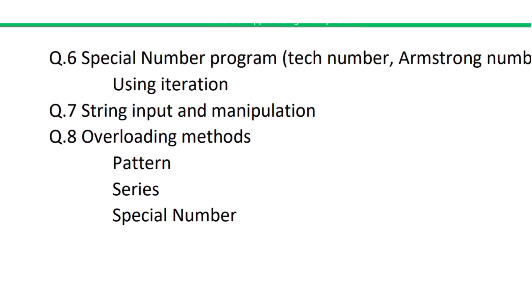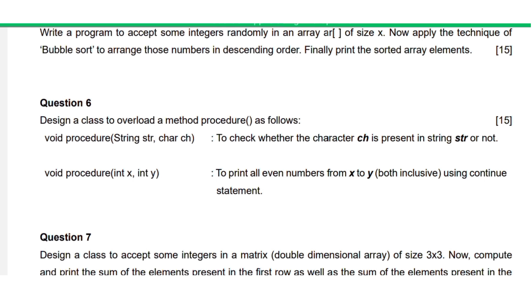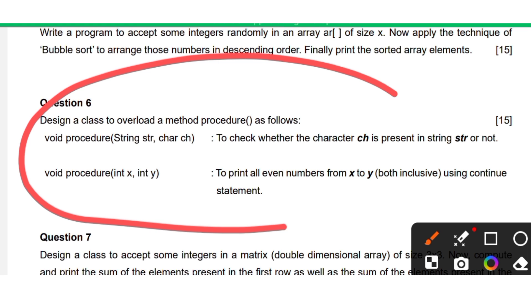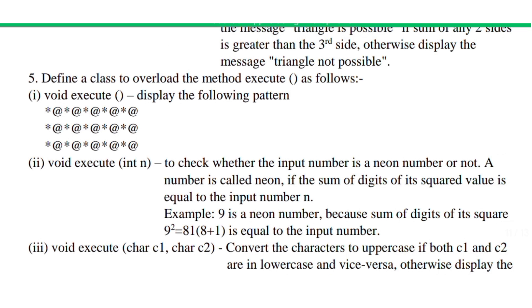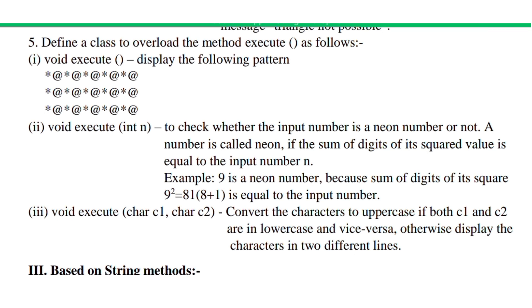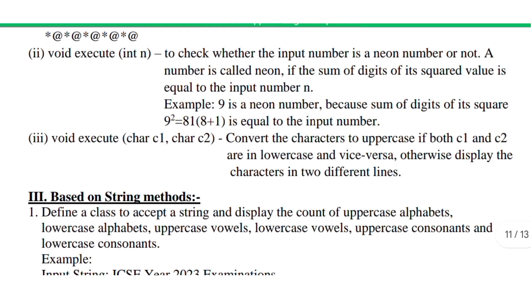The last type of question can appear anywhere in Section B — it can be pattern-based, series-based, or special number programs. I'll show some examples of method overloading questions: one checks whether a character is present in a string; another prints all even numbers from a range x to y. These are examples of overloaded methods that can be asked.